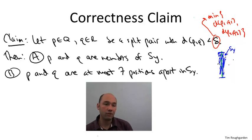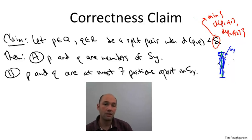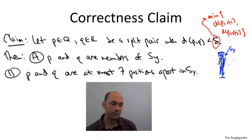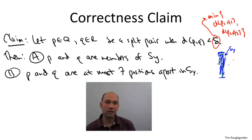There are two claims. First, both members of the split pair P and Q survive the filtering step — they make it into the sorted list S_Y. Second, they will be considered by the double for loop, in the sense that the positions of P and Q in the array S_Y differ by at most seven.